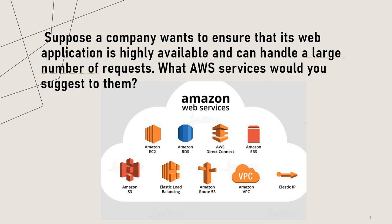Use Amazon RDS to manage the database backend of the web application, Amazon S3 to store static content such as images, videos, and files, Amazon CloudFront to cache the content and serve it from the nearest edge location to reduce latency, and Amazon Route 53 to manage the DNS and route traffic to the nearest edge location.